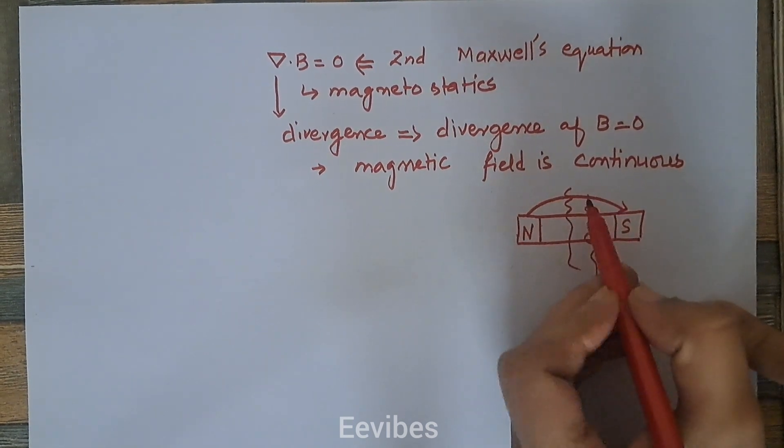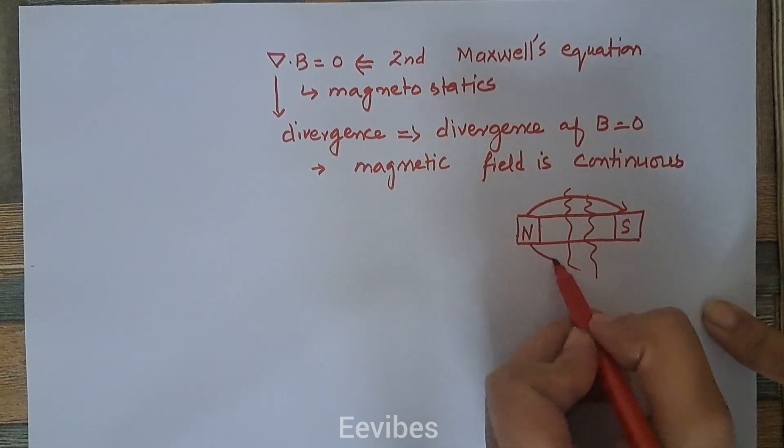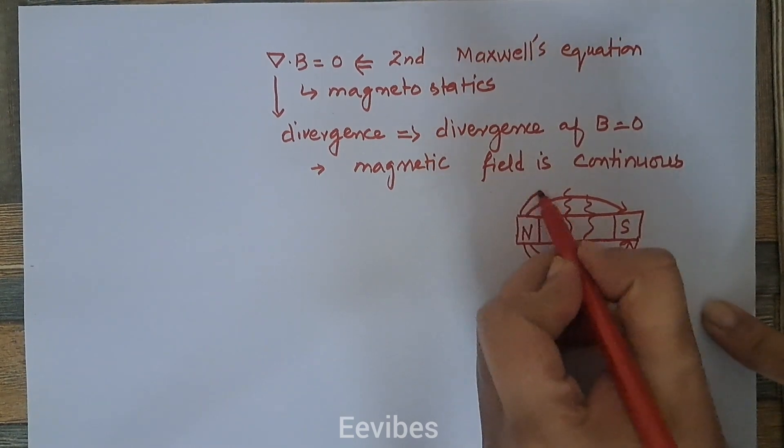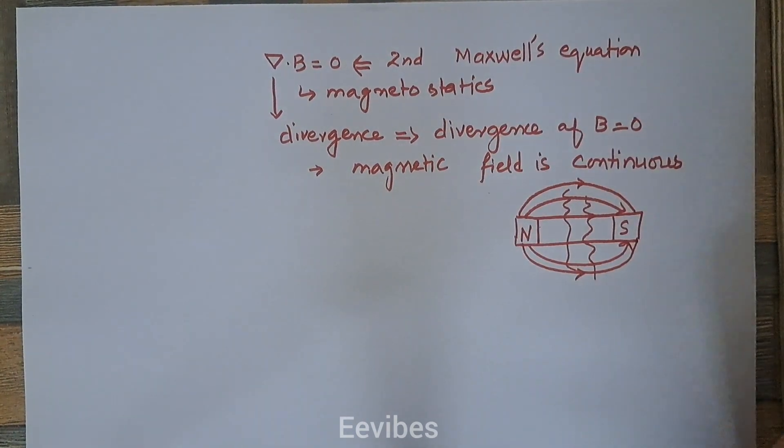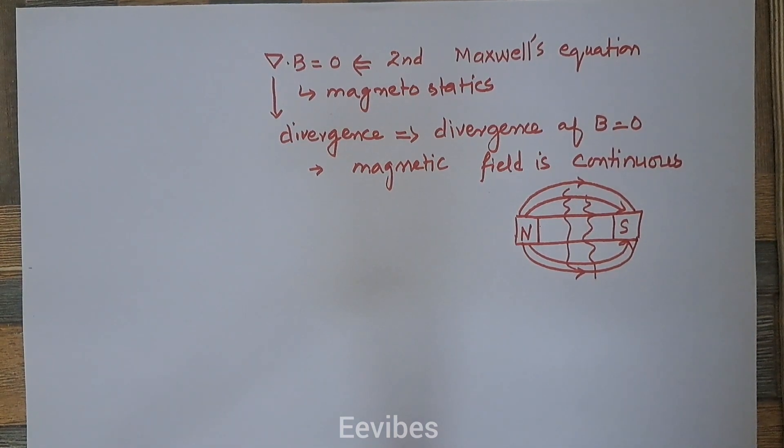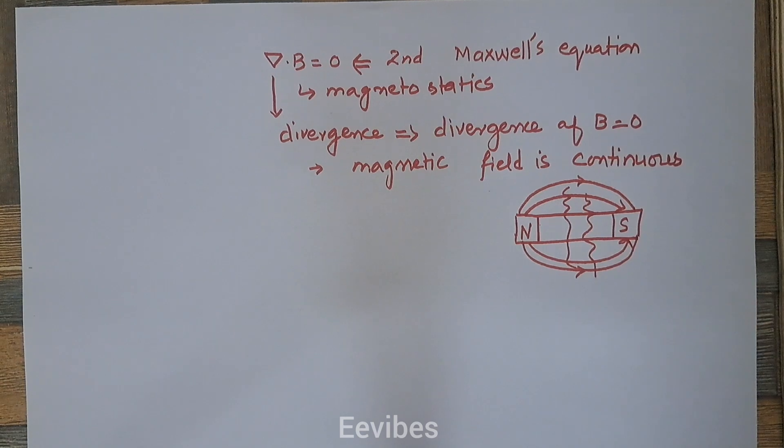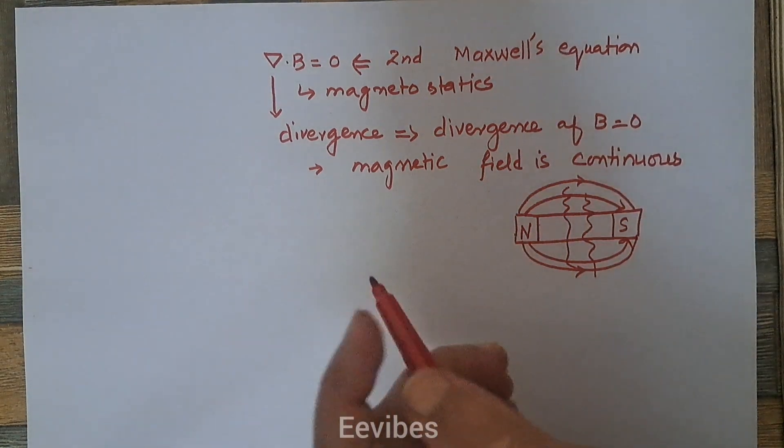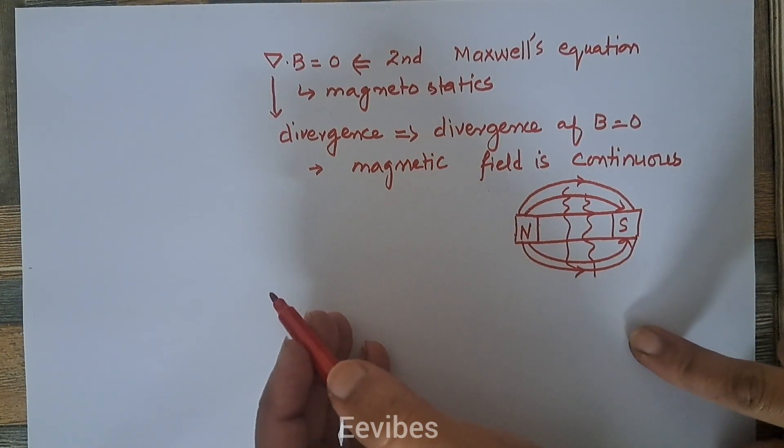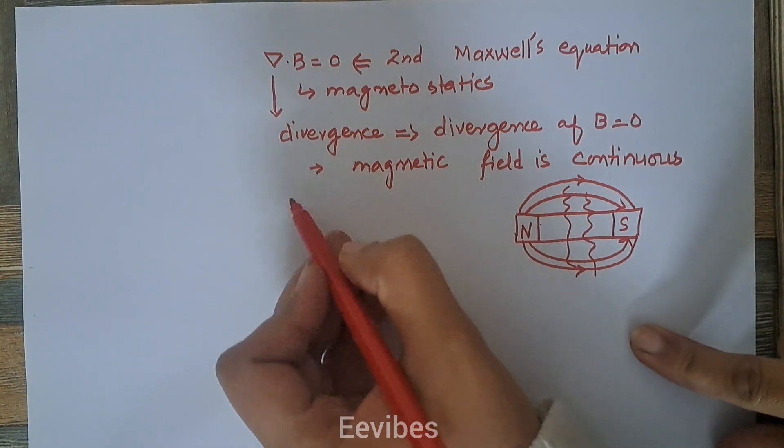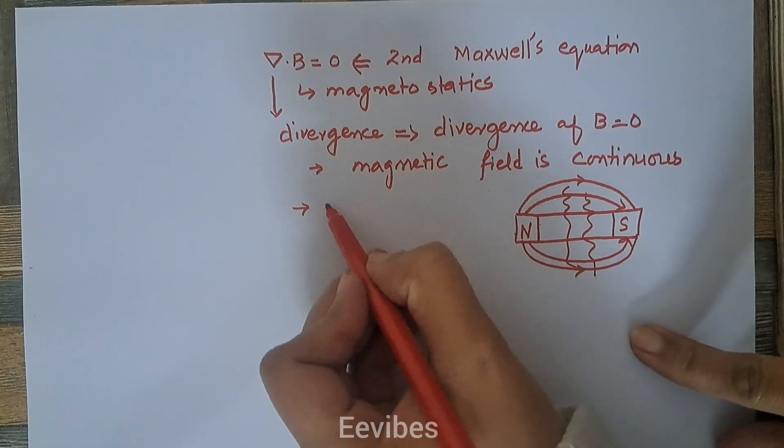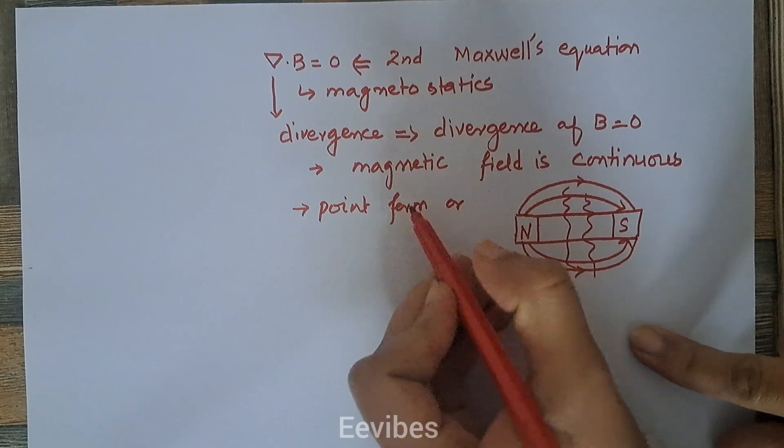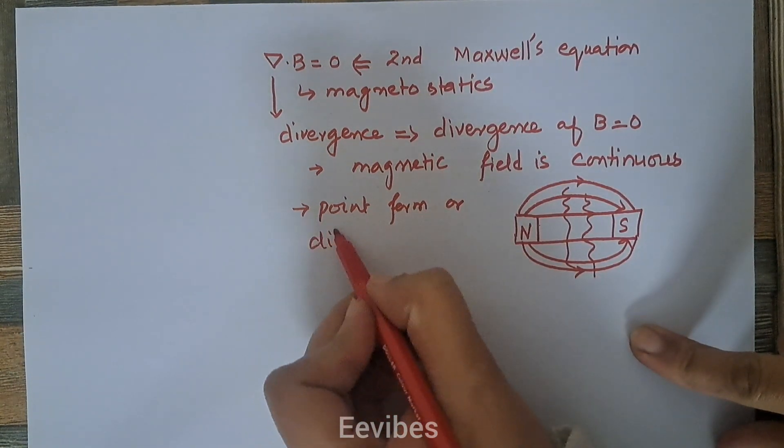In other words, the flux penetrating a closed surface is equal to the flux leaving the closed surface. This equation is also known as the point form or differential form of Gauss's law.